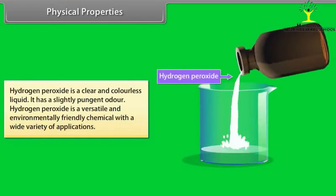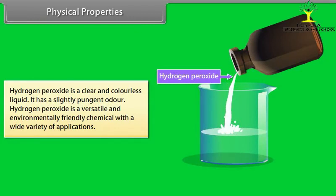Physical properties: Hydrogen peroxide is a clear and colorless liquid. It has a slightly pungent odor. Hydrogen peroxide is a versatile and environmentally friendly chemical with a wide variety of applications.